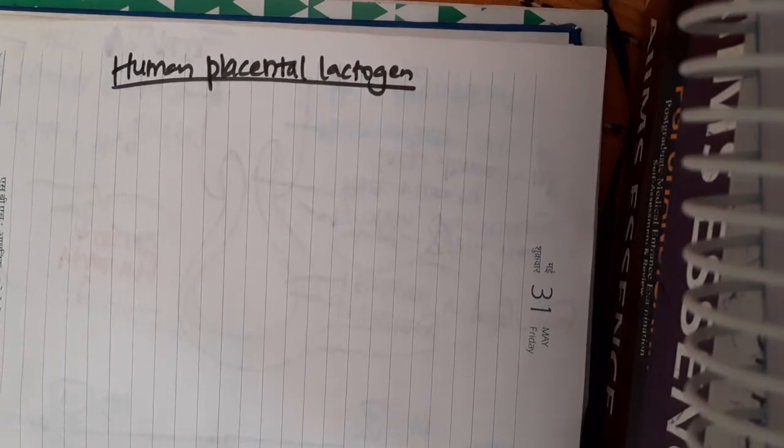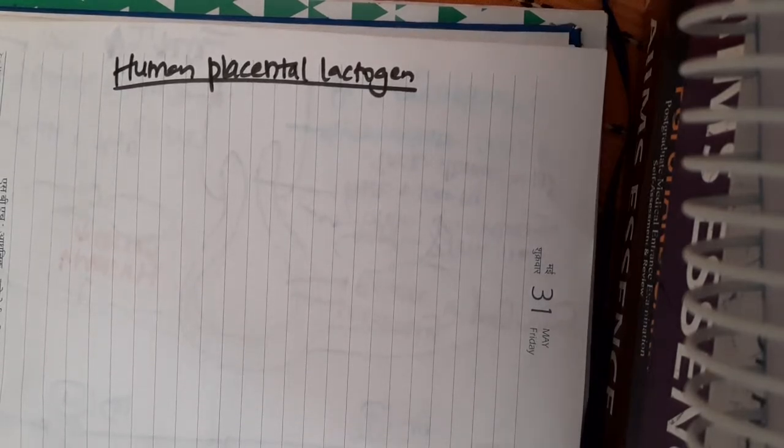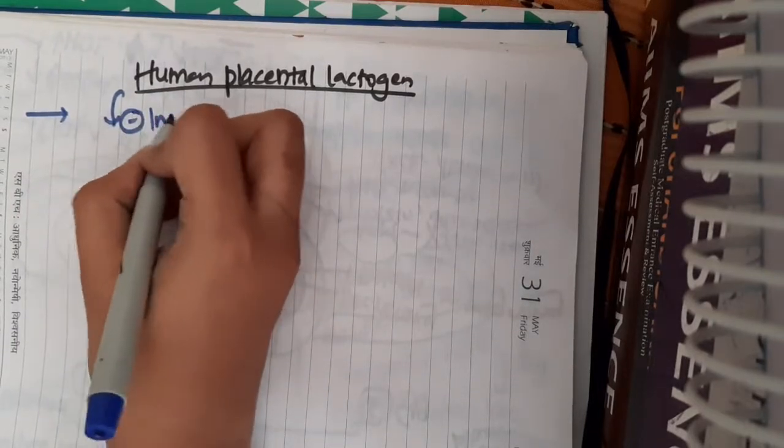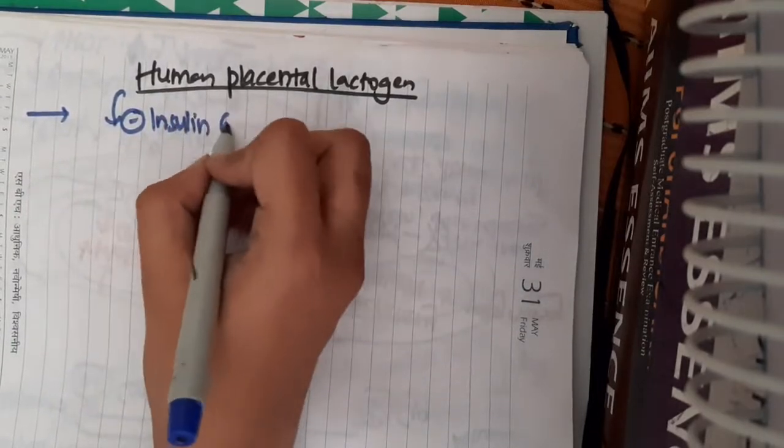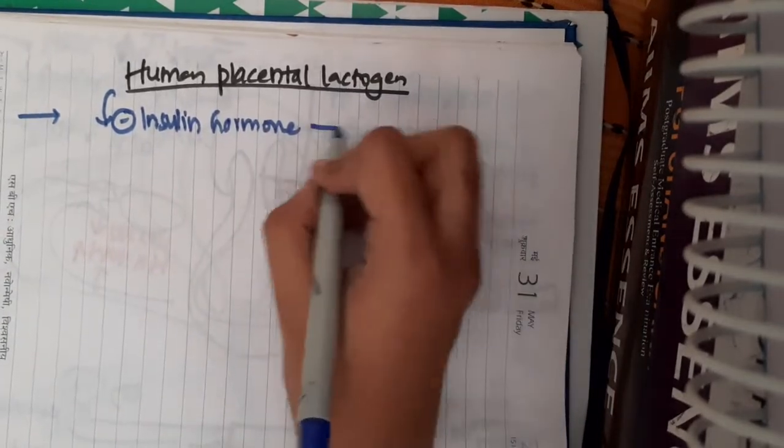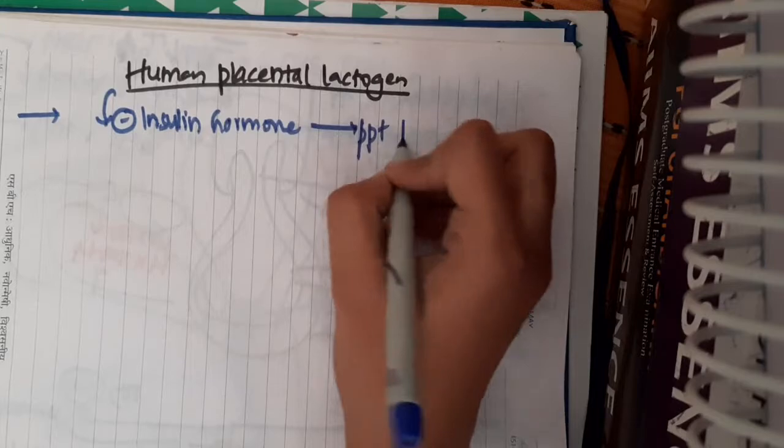Let us now learn some important points about human placental lactogen. This human placental lactogen will inhibit the insulin hormone, and thus it will precipitate diabetes mellitus.